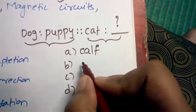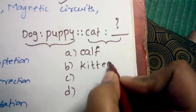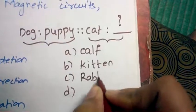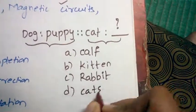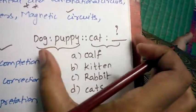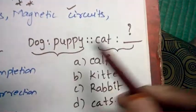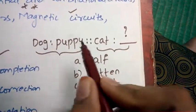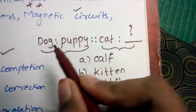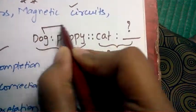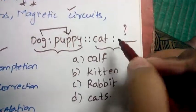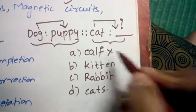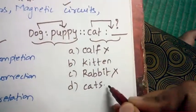Let the options be: calf, kitten, rabbit, cats. So now let's see how to solve this analogy problem. Coming to these two, we need to find out the relationship between dog and puppy. Dog's younger one or child is called puppy. So cat's younger child is called what? Calf - wrong. Rabbit - wrong. Cats - wrong. Cats are the plural form of cat, but they didn't ask you the plural form.